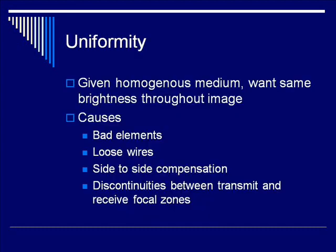One of the properties we would measure using a tissue-mimicking phantom is called uniformity. Uniformity basically means that if you're looking at the same tissue underneath the probe, you want it all to look the same. Liver should look like liver everywhere; kidney should look like kidney everywhere. Liver in the near field should look like liver in the far field. More rigorously, given a homogenous medium, we want to have the same brightness throughout the image.